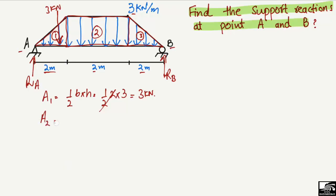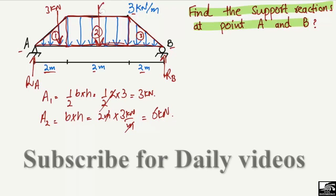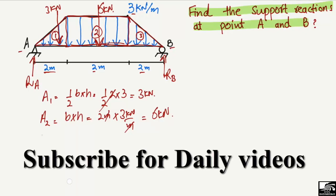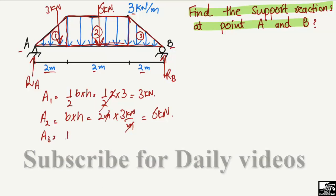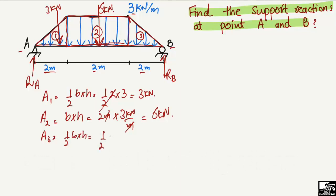The second area, A2, is a rectangle: base times height = 2 meters times 3 kN/m = 6 kilonewtons, acting at the centroid of the rectangle. The third area is again a triangle: one-half times 2 meters times 3 kN/m = 3 kilonewtons, acting at the centroid of that triangle.